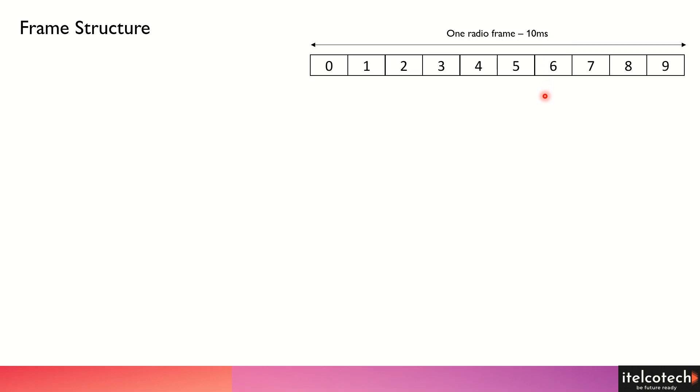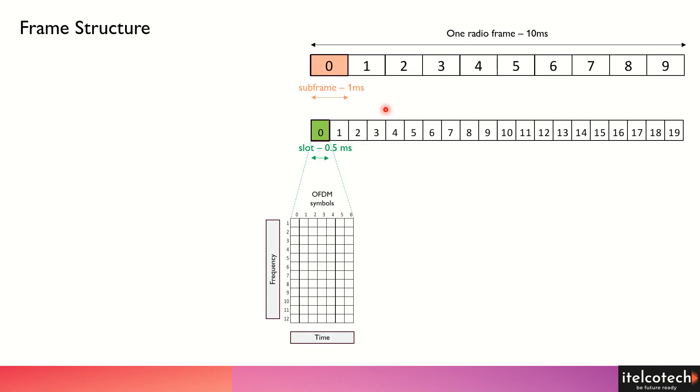This radio frame consists of 10 different subframes, numbered 0 to 9, each one millisecond. Within each subframe, we have different slots allocated - two slots within one particular subframe, so one slot is 0.5 milliseconds.